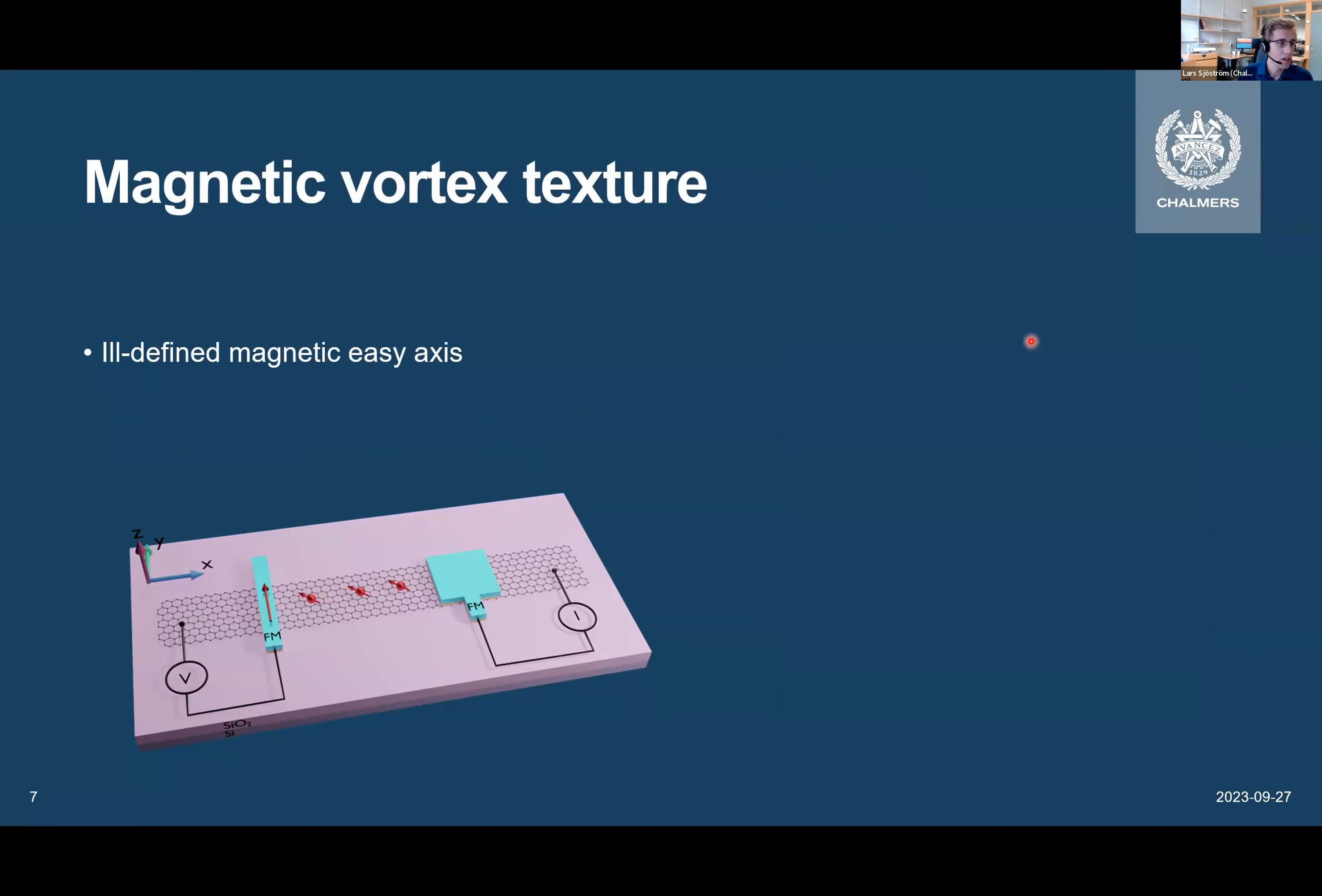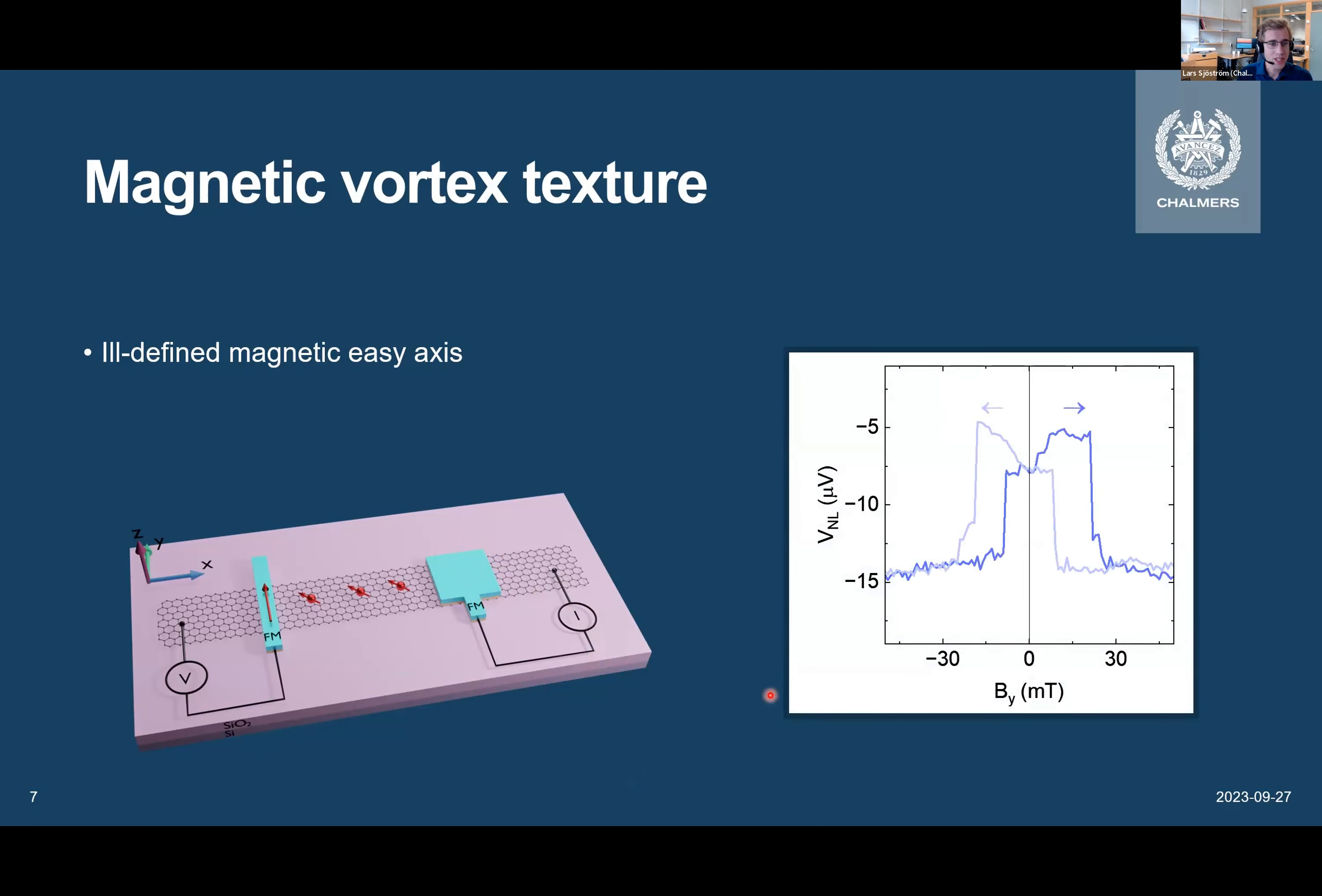Then, finally, we have also looked at this type of square contact, which is actually very interesting because up to this point, all the contacts have been thin rectangular contacts, which all have well-defined magnetic easy axis. So, in that case, we have either plus or minus magnetization. But in this case, we have instead an ill-defined magnetic easy axis. So, here we can basically have magnetizations in any direction.